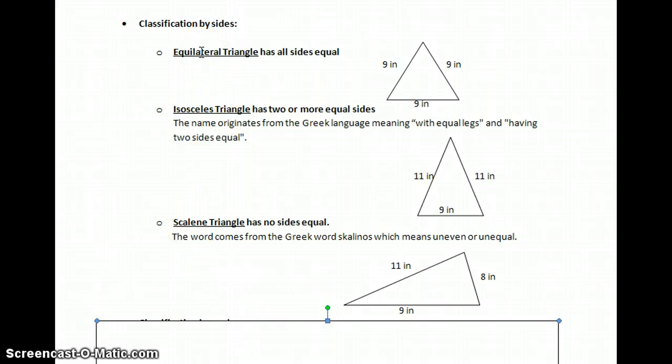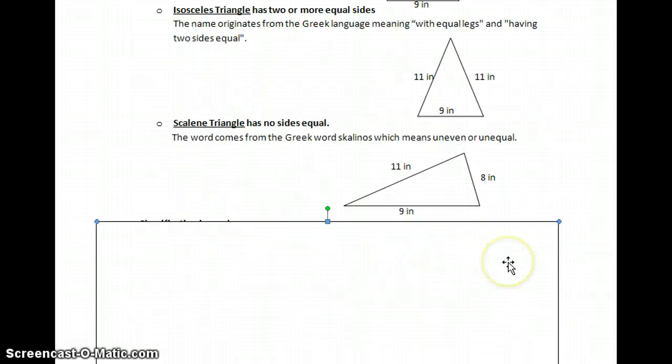Equilateral, you'll get pretty easily. Isosceles, two. And then scalene's the other one. Now, we can also classify triangles by their number of angles.